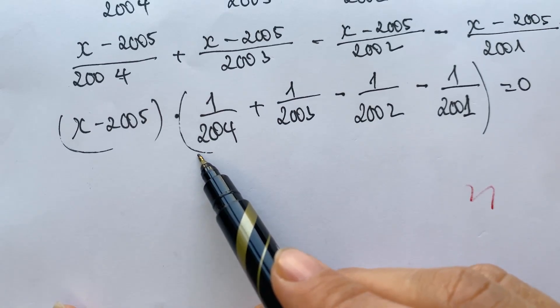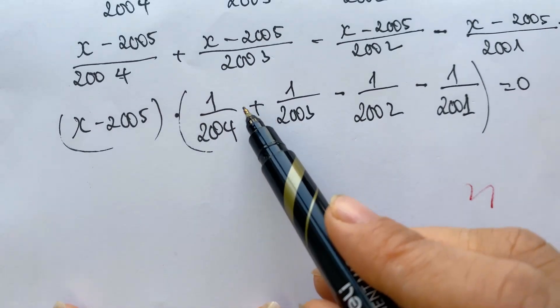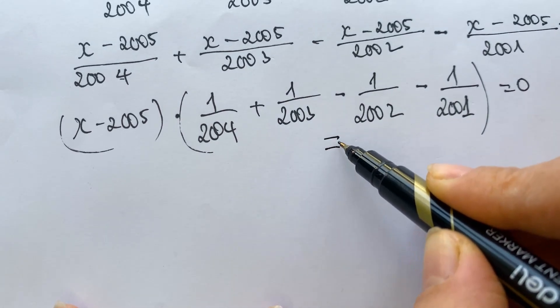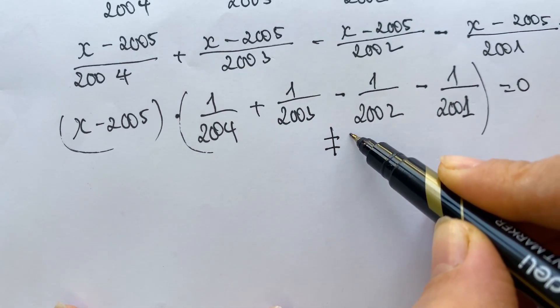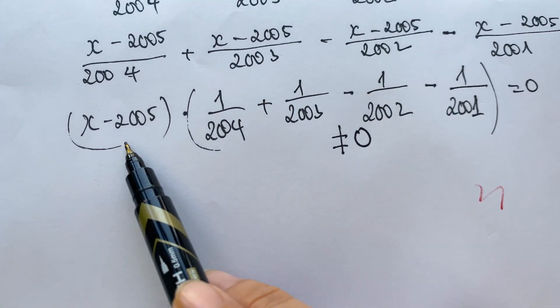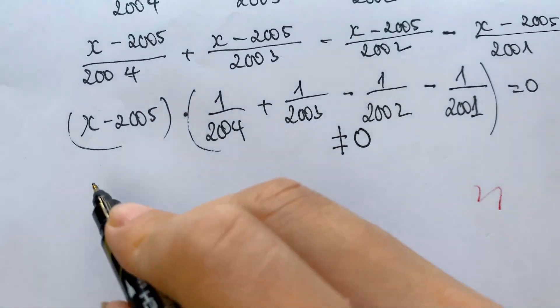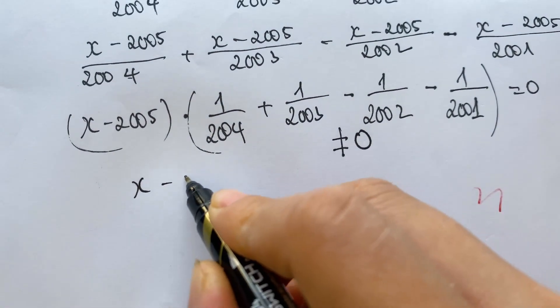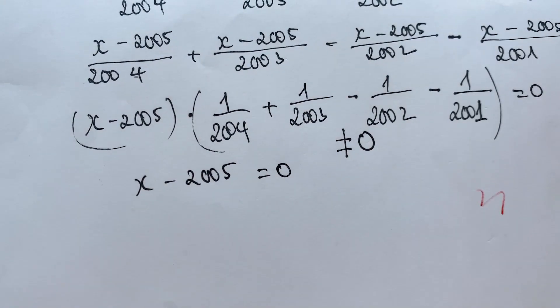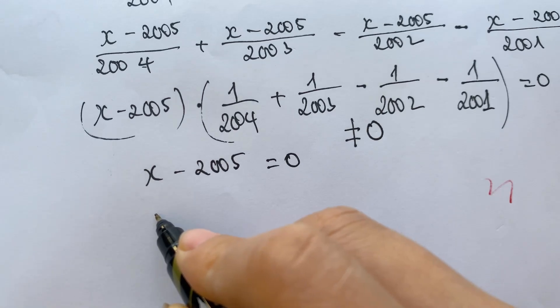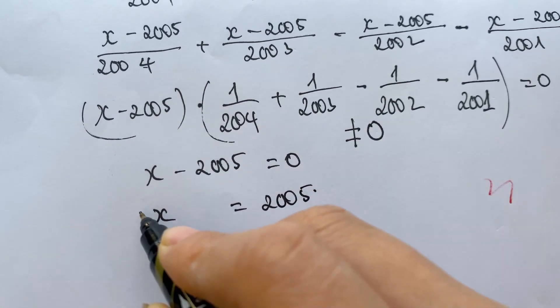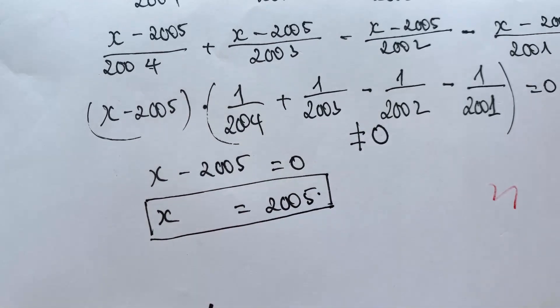So in this case, everyone can see, for this expression in the parentheses, it's always not equal to 0. So therefore, in this equation, we have the value x minus 2005 equals 0, right? So we have the value of x equals 2005, right?